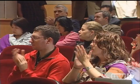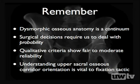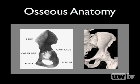This presentation addresses the continuum of dysmorphic sacral anatomy and how surgeons must deal in probabilities when making surgical decisions. It covers qualitative criteria proposed for identifying dysmorphic sacral osteology and moves toward more quantitative understanding, particularly presenting findings on the importance of coronal and axial orientation of the upper sacral segment in determining when a screw can safely be placed there.